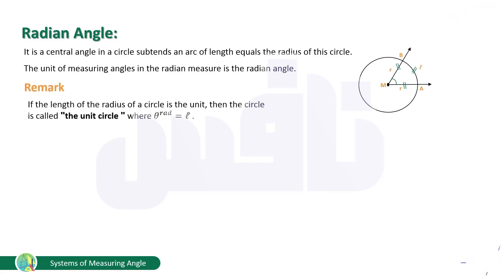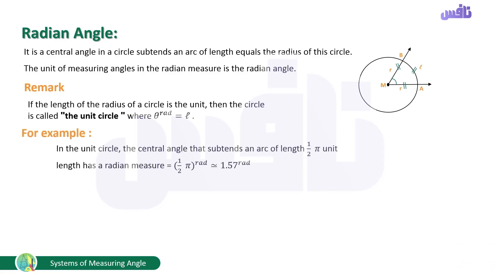If the length of the radius of a circle is one unit — 1 cm, 1 meter, 1 km, etc. — then the circle is called the unit circle. In the unit circle, θ rad = L, since r = 1, so L/1 = L. For example, in the unit circle, if the central angle subtends an arc of length π/2 units, then θ = π/2 rad ≈ 1.57 rad.